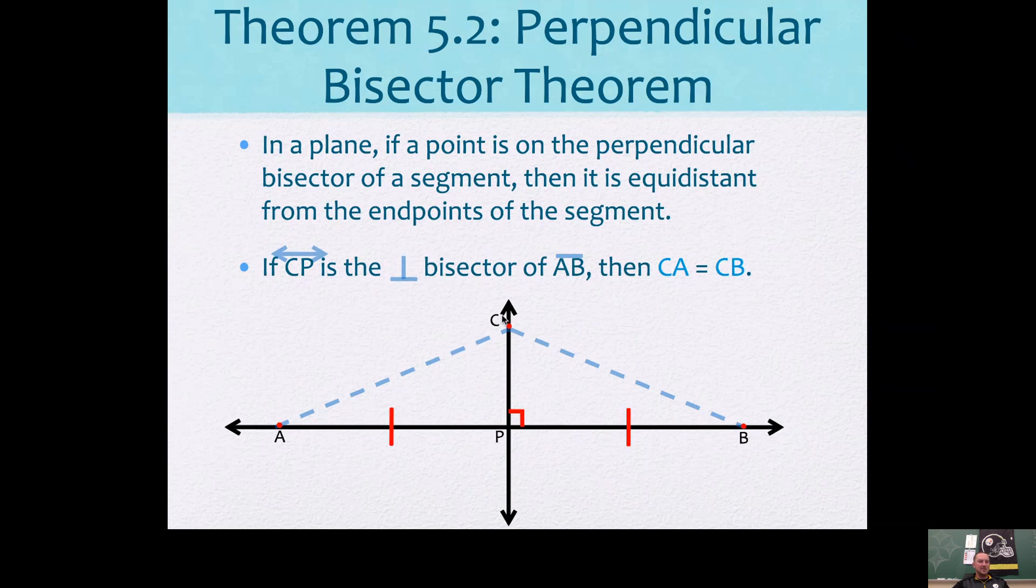So if segment CP is the perpendicular bisector of segment AB, notice how we go to a right angle, and we go to P as the midpoint because those marks are the same, then we know the distance from C to A is the same as the distance from C to B. Now, before we move on, notice what is formed here. You have a line or part of a line crossing a segment, and then you're talking about these lengths.